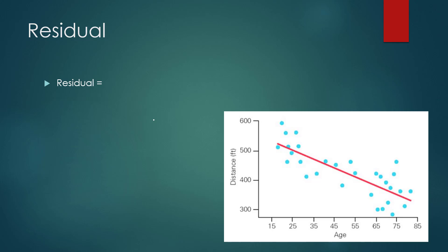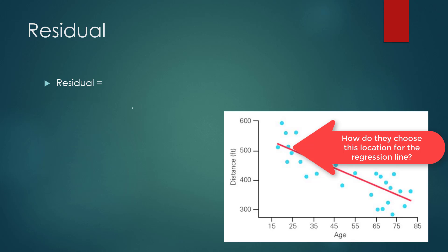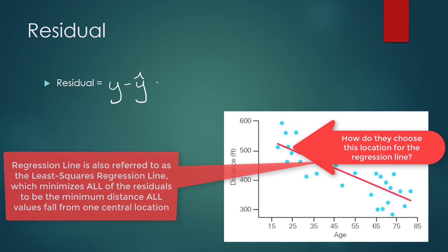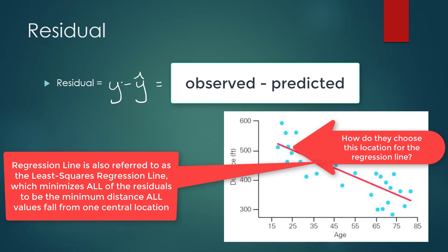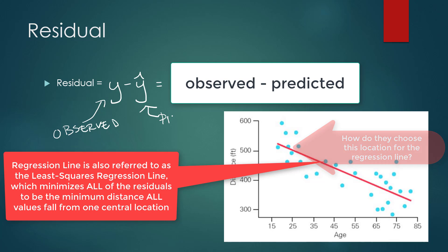Finally, let's talk about where that regression line comes from — how they choose its location. What they do is minimize the distance that all of the values fall from that line. They measure that distance through something called a residual, which measures how far your observed value of y is from the predicted value coming from the equation.